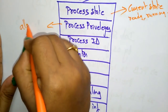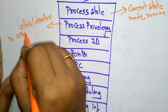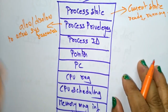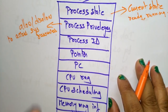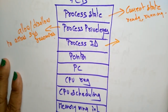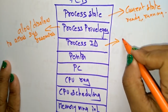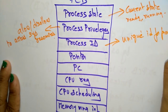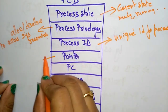Process privileges means whether to allow or disallow access to system resources. To use system resources, that process has to be given some permissions, and that information is stored in the Process Control Block. Process ID is a unique ID for each process stored in the operating system, and based on that ID we can identify which process it is.